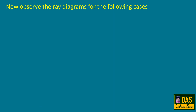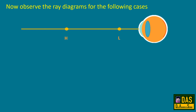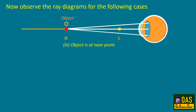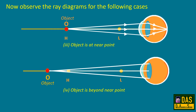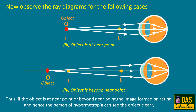Now observe the ray diagrams for the following cases. If the object is beyond the near point, the rays coming from the object refract at the eye lens and form an image on the retina. Thus, if the object is at the near point or beyond, the image forms on the retina and the person with hypermetropia can see the object clearly.